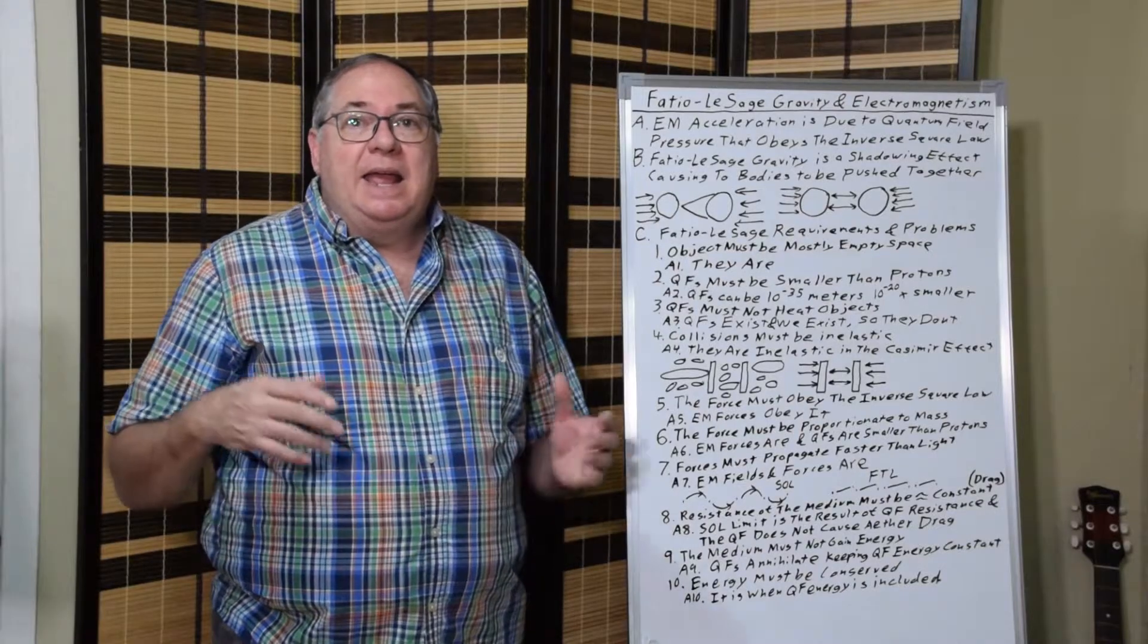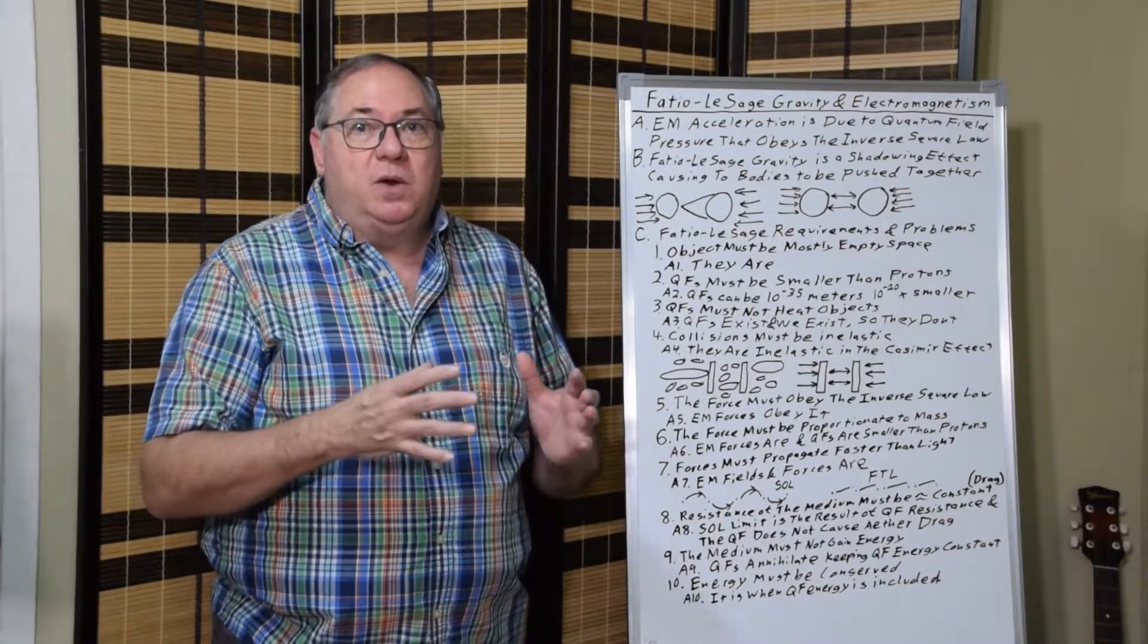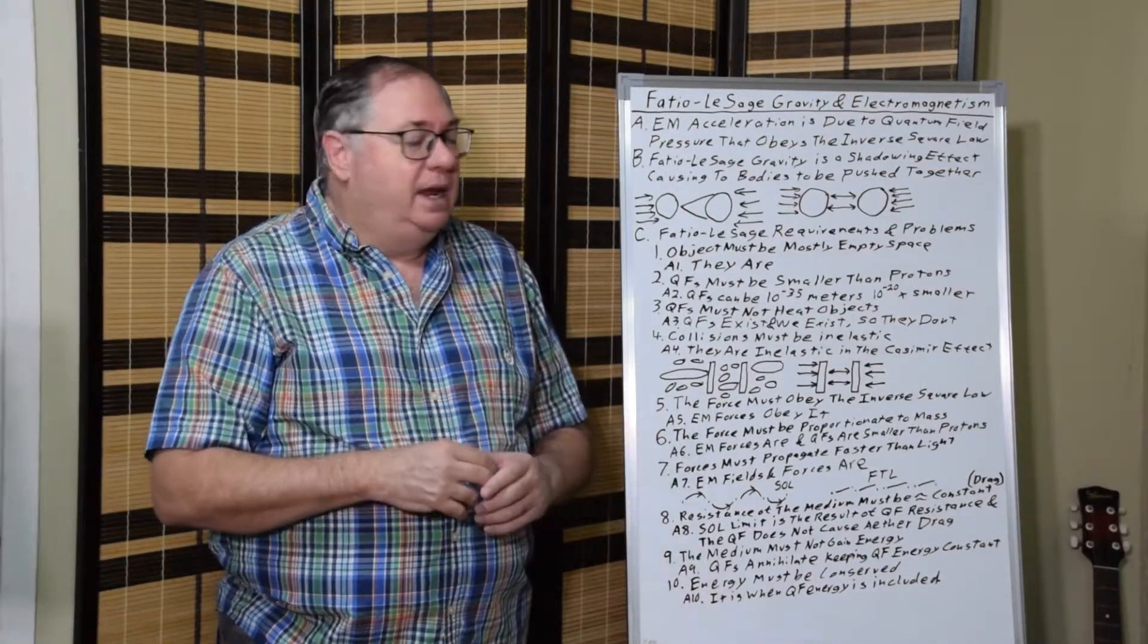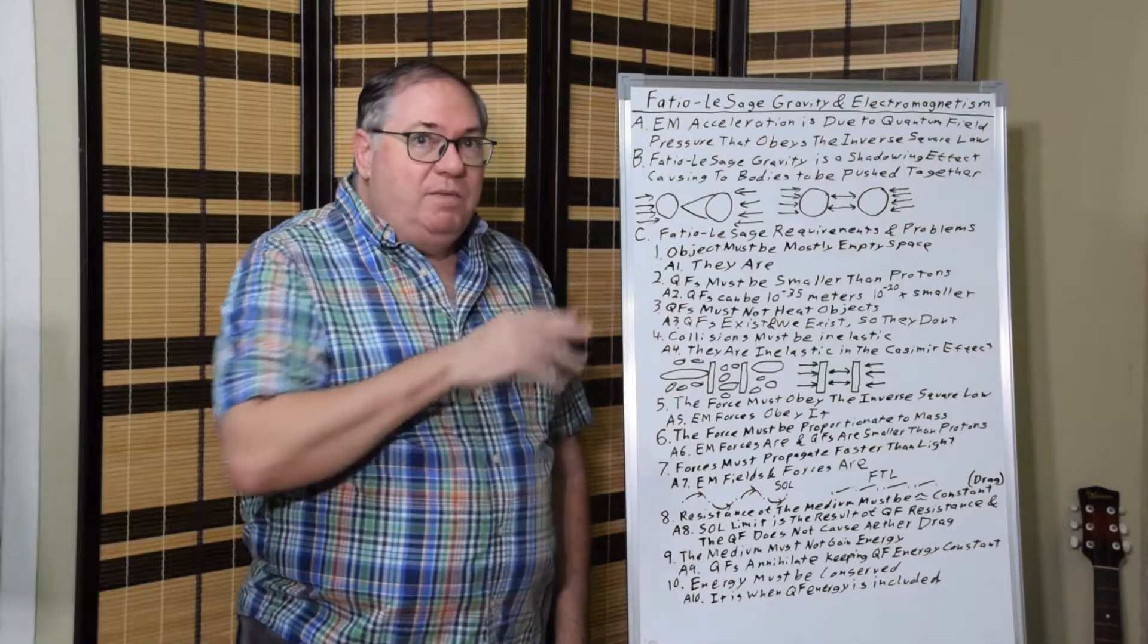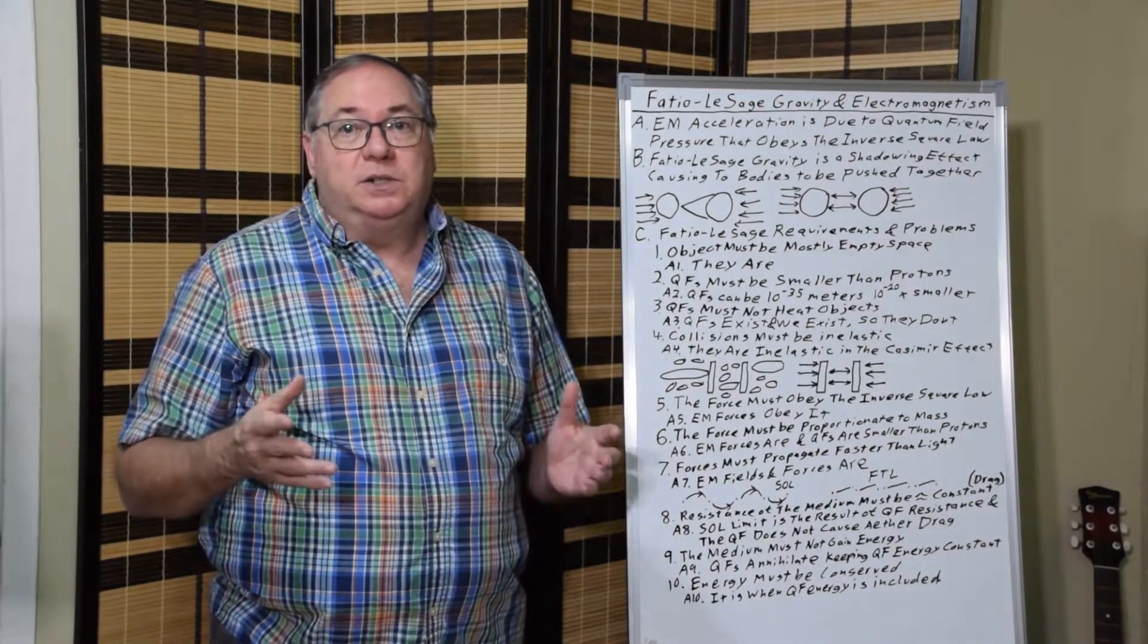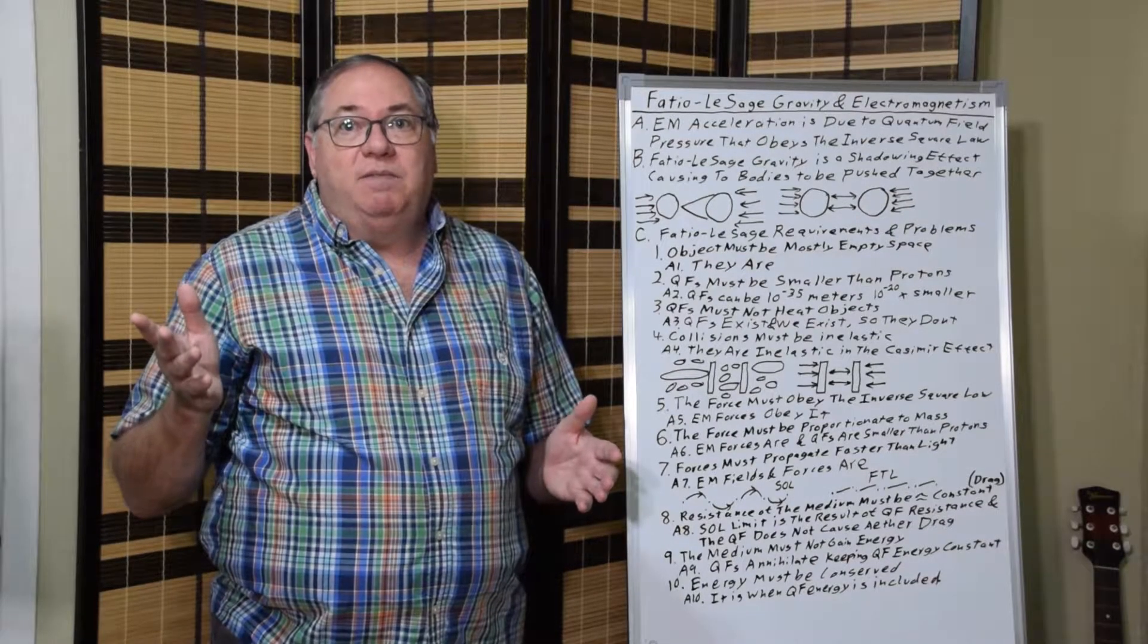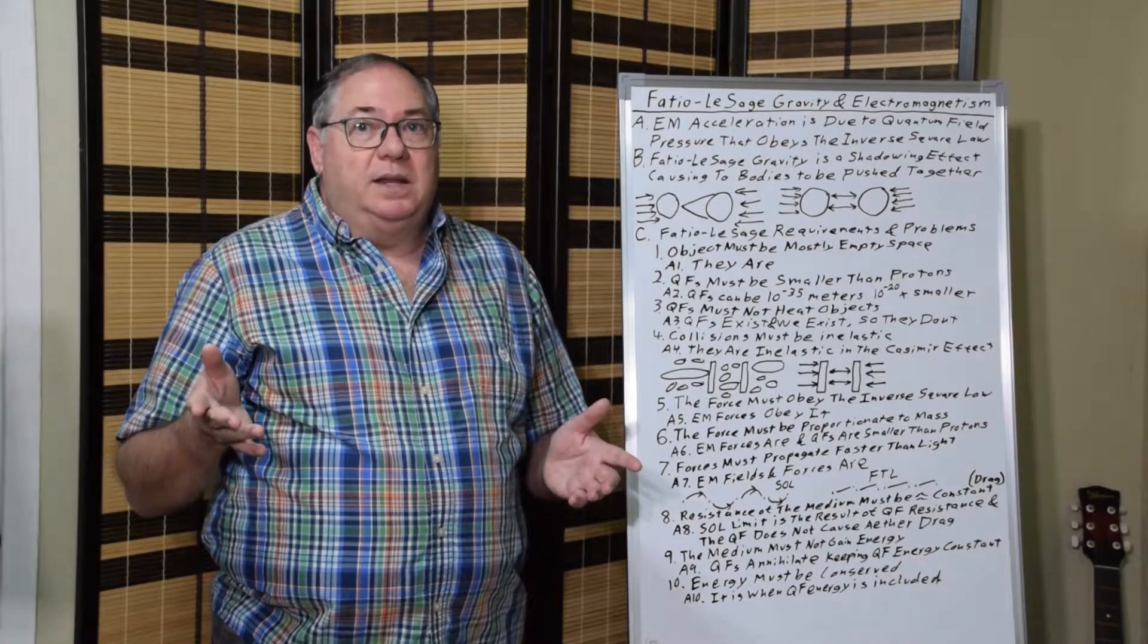And then he realized that the actual particles have to be much smaller than the matter. And once again, the quantum fluctuations can be much smaller than the matter and much larger. But at the small end it can be 10 to the minus 35 meters, the scale of the Planck length.